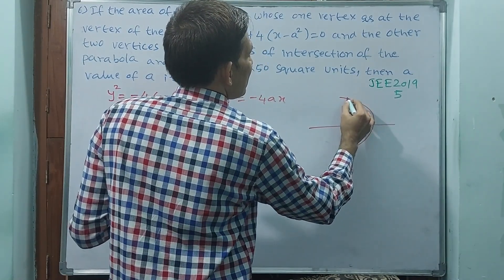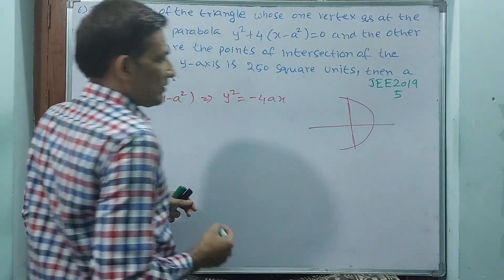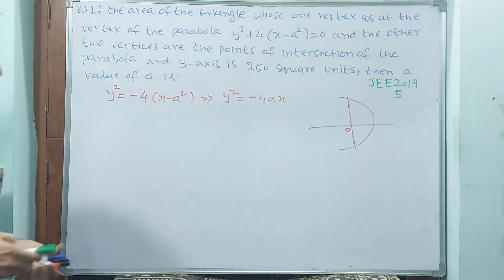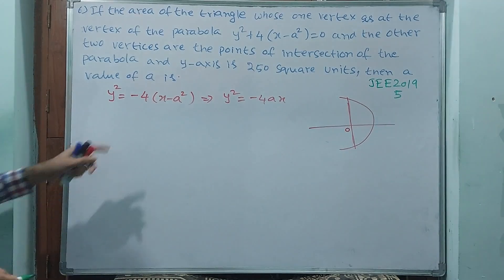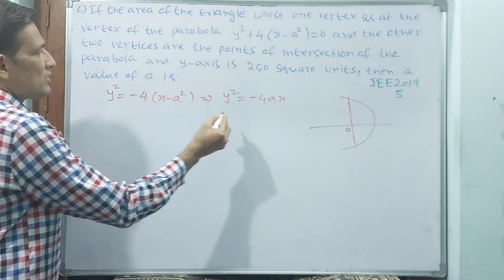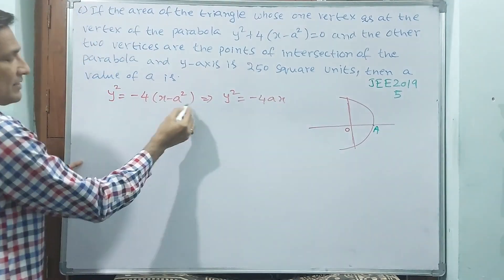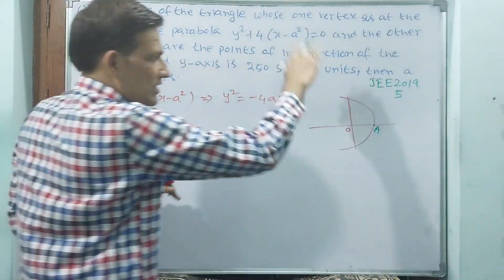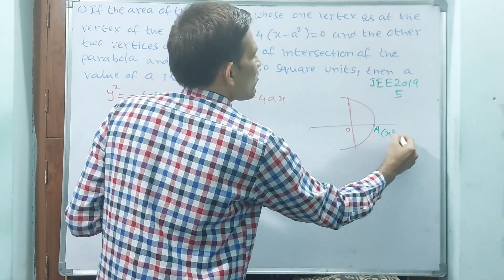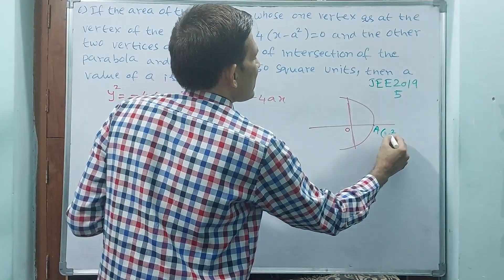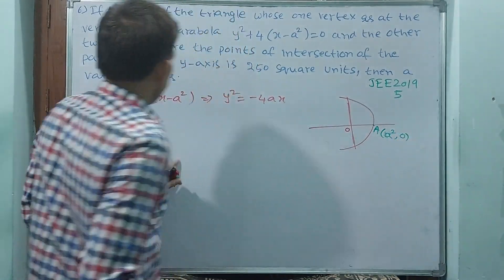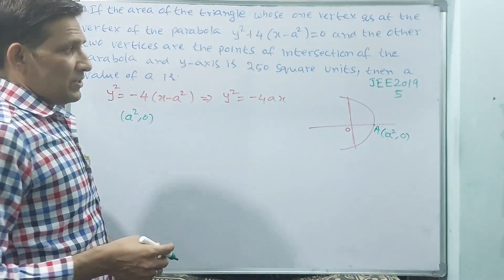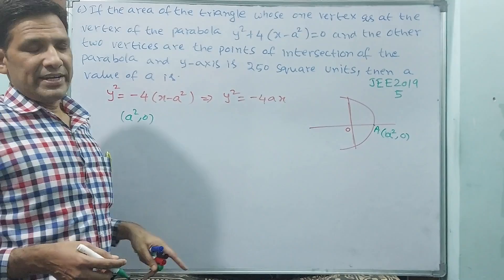That means what you are going to understand? Like this will be there, parabola. This is origin. Why I am telling you? See, x minus a square means vertex a. This vertex a is a square comma 0. Y is 0. That means a is a square comma 0. Vertex there. This vertex is one of vertices for triangle.